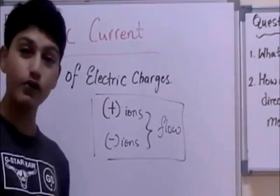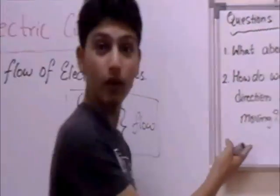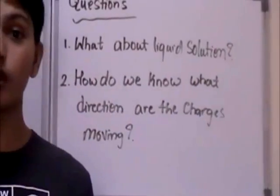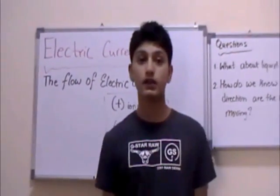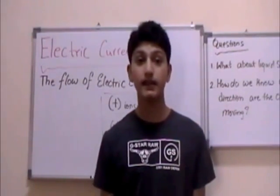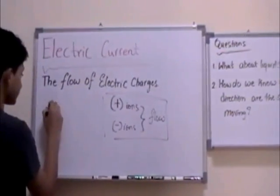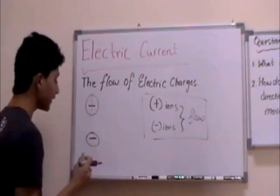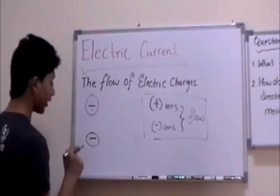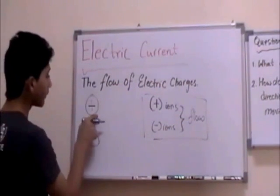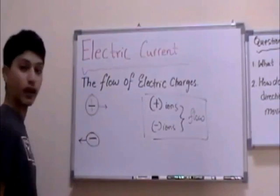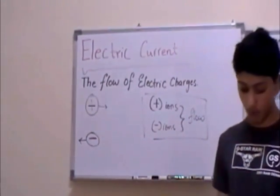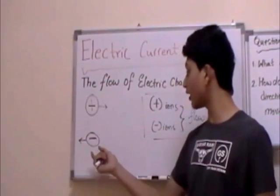How do we know what direction the charges are moving? It's actually quite simple. To determine the direction of the charges, consider which direction the positive ion — basically the proton — is moving. There are protons, neutrons, and electrons. If the electron is moving towards the left, the proton will move in the opposite direction, which is to the right. So the positive current, which is the proton, moves in the direction opposite to the electrons.